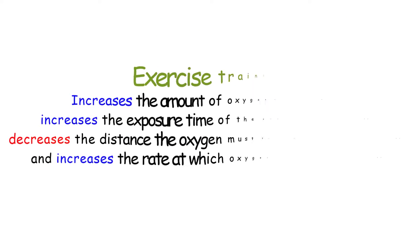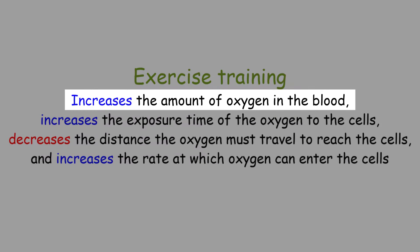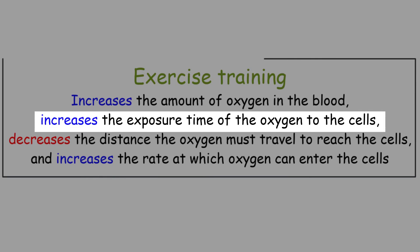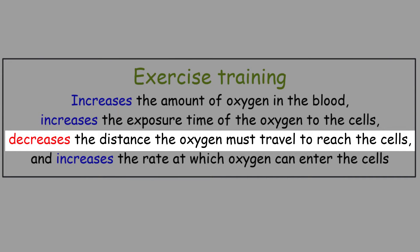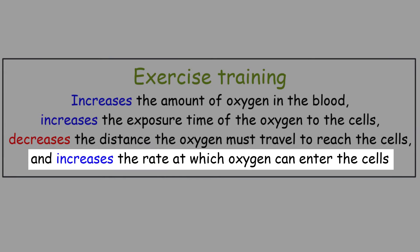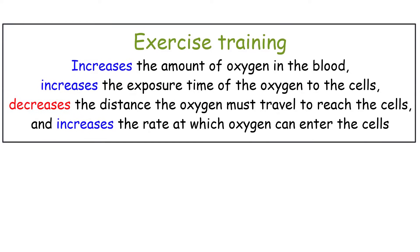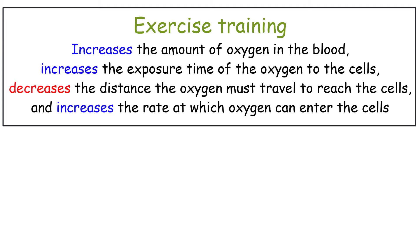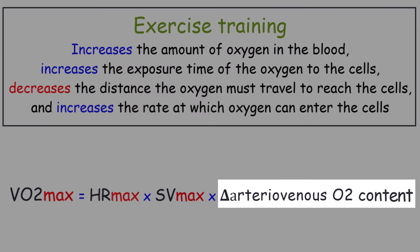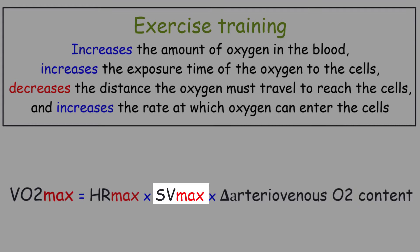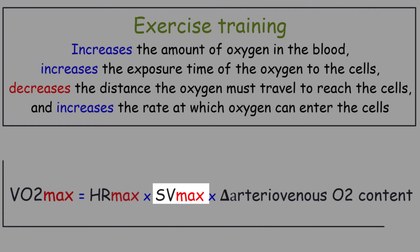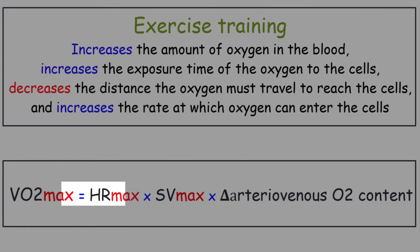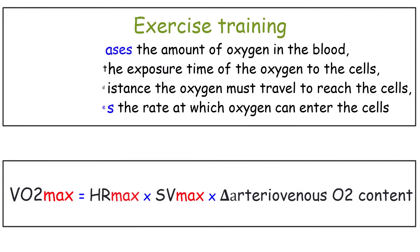Therefore, exercise training increases the amount of oxygen in the blood, increases the exposure time of oxygen to the cells, decreases the distance oxygen must travel to reach the cells, and increases the rate at which oxygen can enter the cells. Coupling the increased arteriovenous oxygen difference with the increase in stroke volume leads to an increase in oxygen consumption per minute, which increases VO2 max.